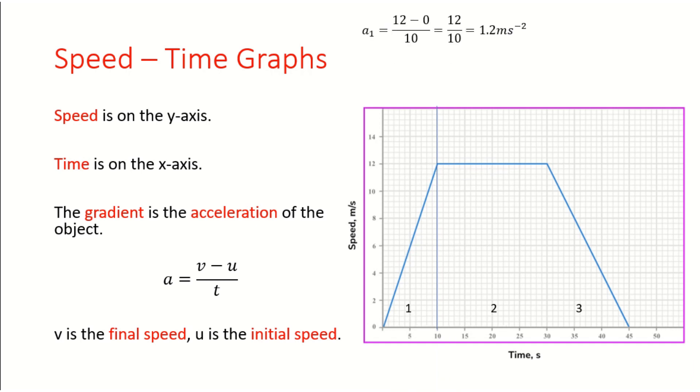What we would do is we take the final speed, 12. Take away the initial speed, 0. And divide that by 10. We would then get our answer of 1.2. We've got some quite funny units there. We would call these meters per second squared. So, the acceleration during section one is 1.2 meters per second squared.